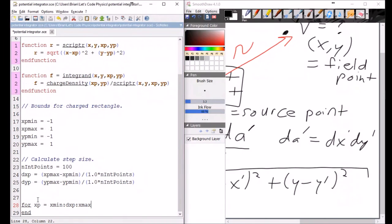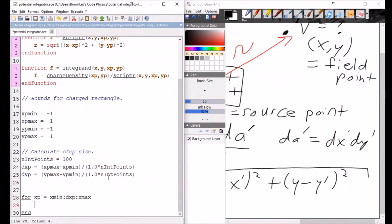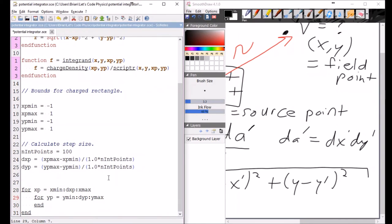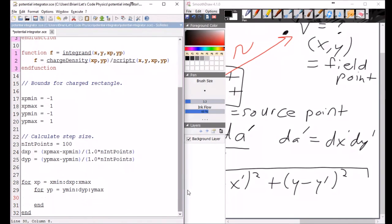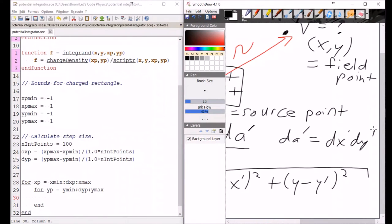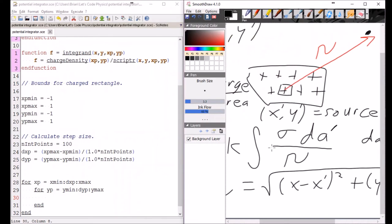So what I do is I loop over those and then I need to loop over my y prime. So for y prime equal to y min by dy prime y max. Scilab is sometimes kind enough to give you an automatic end. So what we're doing here is this is the double integral. This is saying I want you to loop over values of x prime and I want you to loop over values of y prime. So that way we're getting every possible chunk inside our charged object.